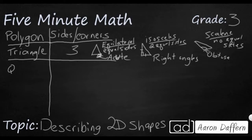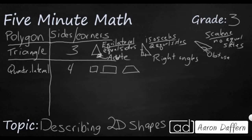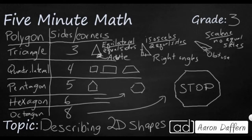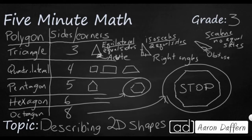Let's move past triangles and look at a few others. A quadrilateral is a term for four sides — there are a lot of different quadrilaterals, including squares, rectangles, and trapezoids — that'll be a different video. Other common ones would be pentagons, which have five sides; think of home base in baseball. And the final two we're looking at today are hexagons, which have six sides, and octagons, which have eight sides. You've seen octagons all over the place as stop signs.